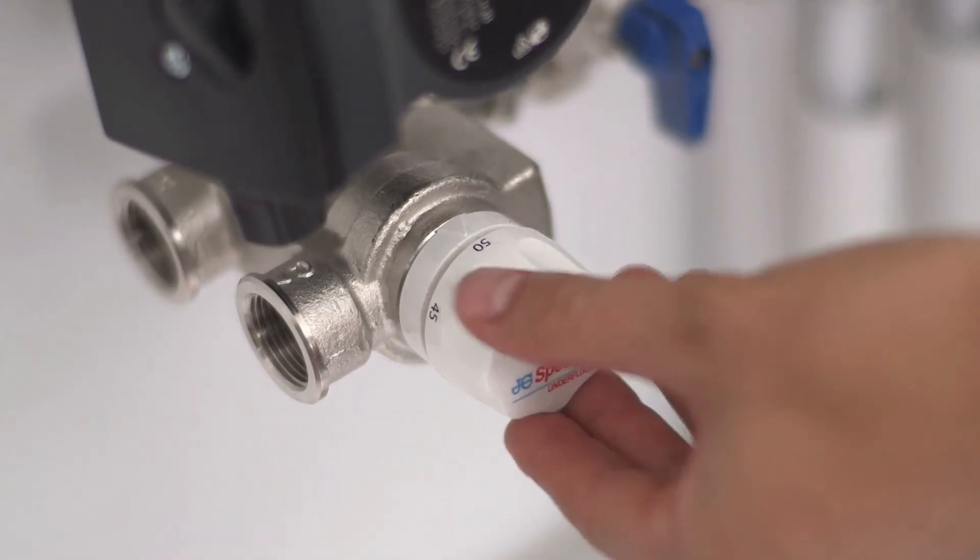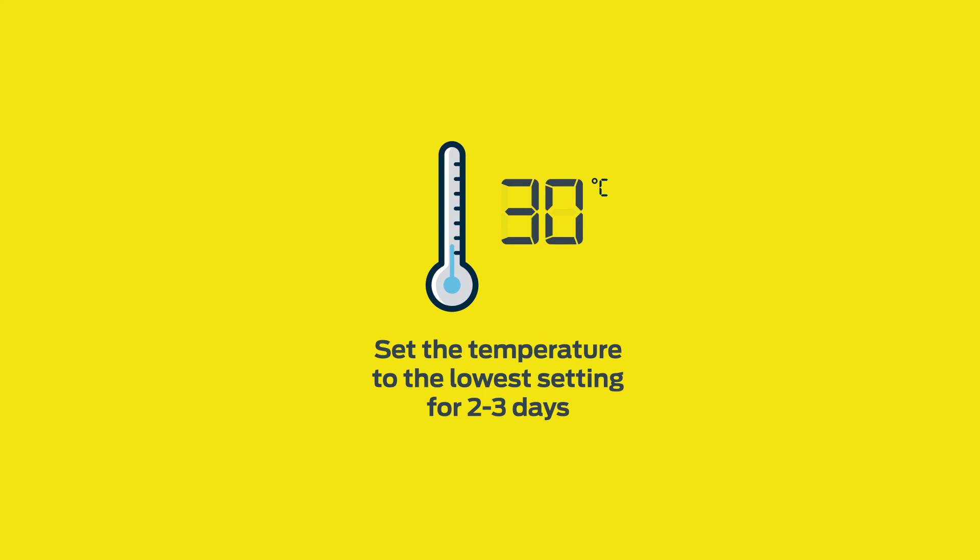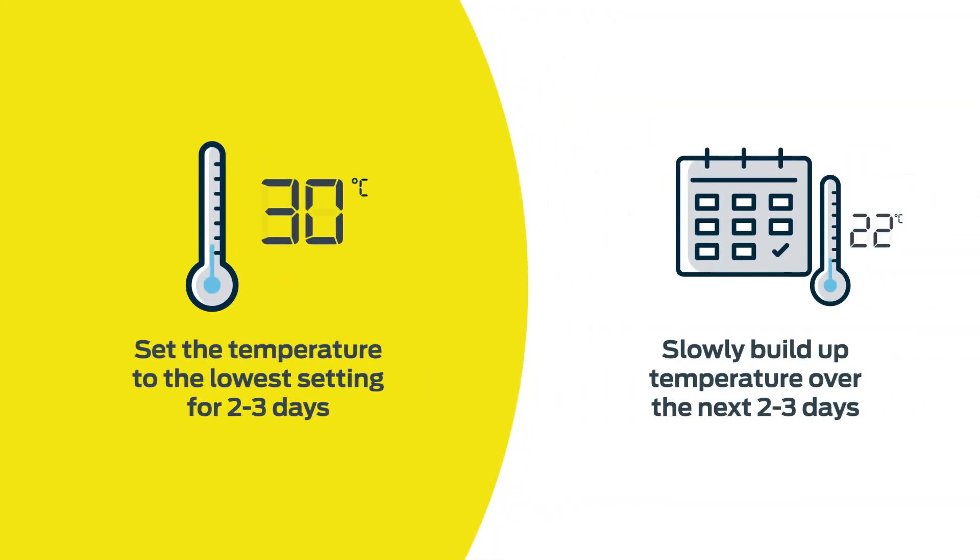When turning on initially, the temperature of the blending valve should be set to the lowest setting, 25 to 30 degrees, and run for 2 to 3 days before building up the temperature over the next couple of days.